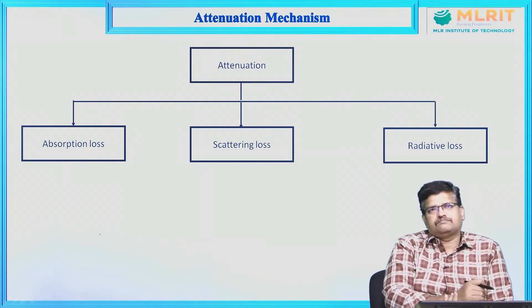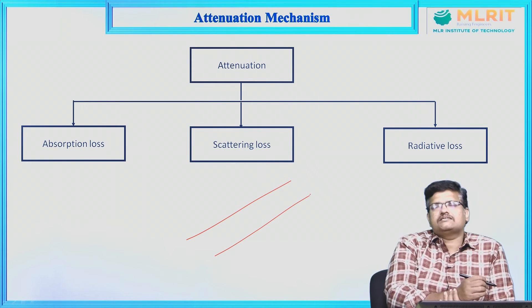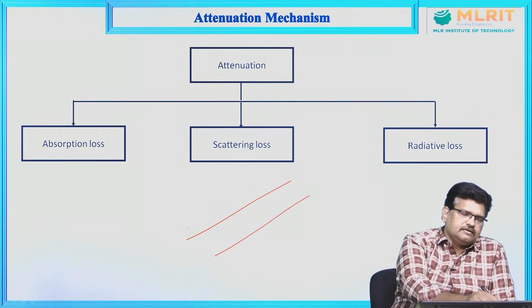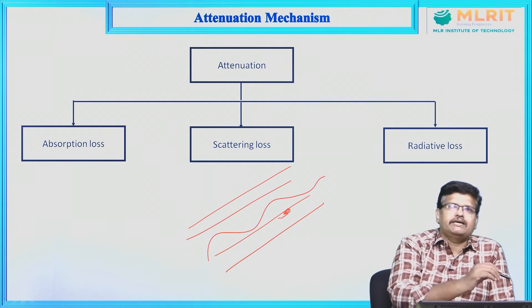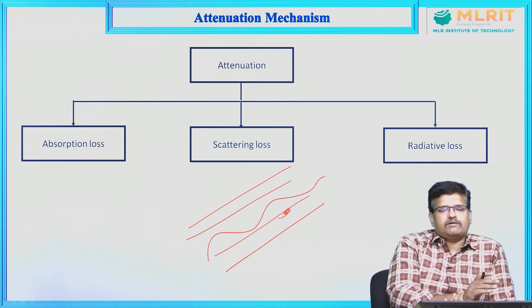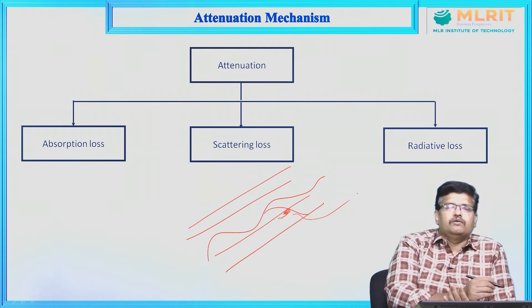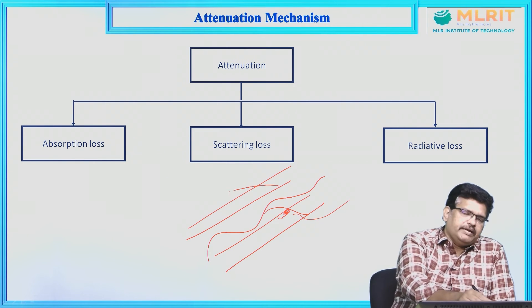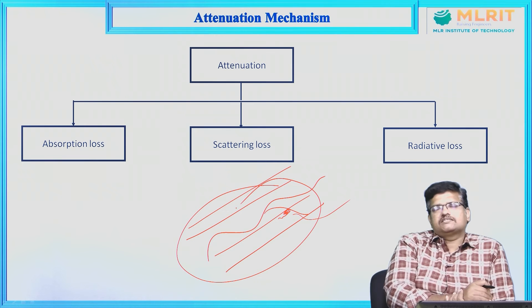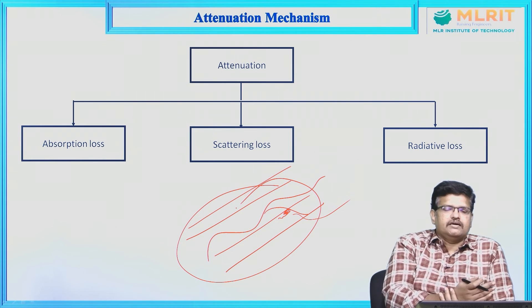Scattering loss occurs due to microscopic variation in material density. In the fiber core, as the light signal propagates, microscopic variations in material density cause the light signal to scatter and go out of the fiber. This is a major drawback, and we have to maintain proper uniformity; if variation occurs, scattering loss will result.